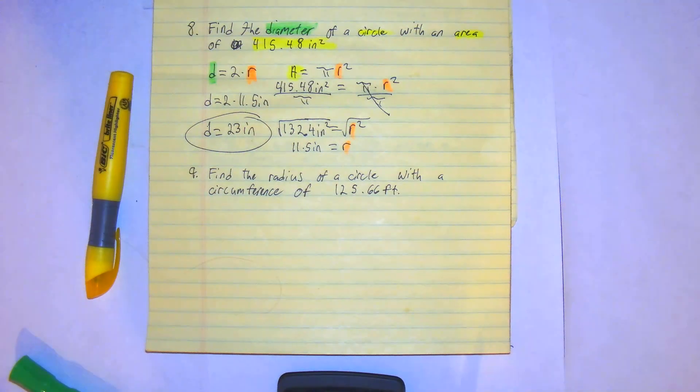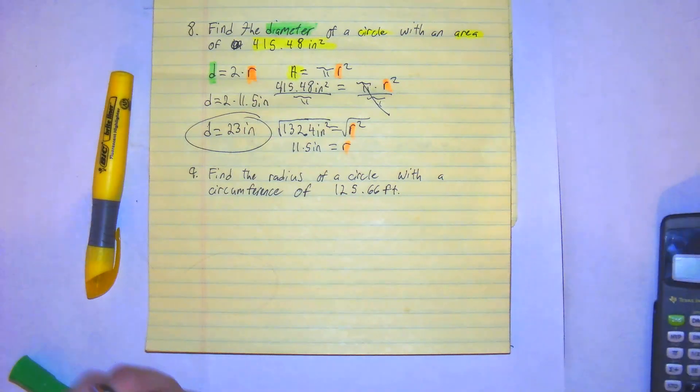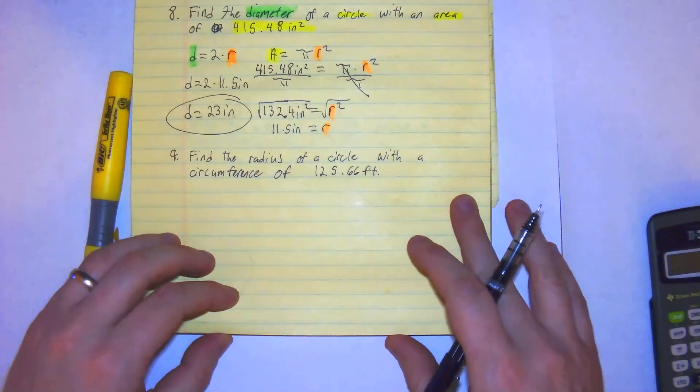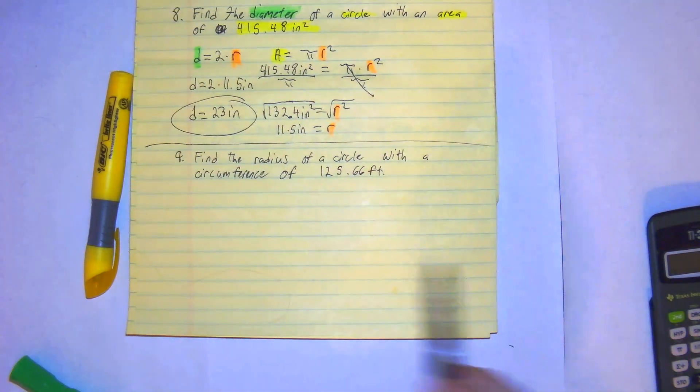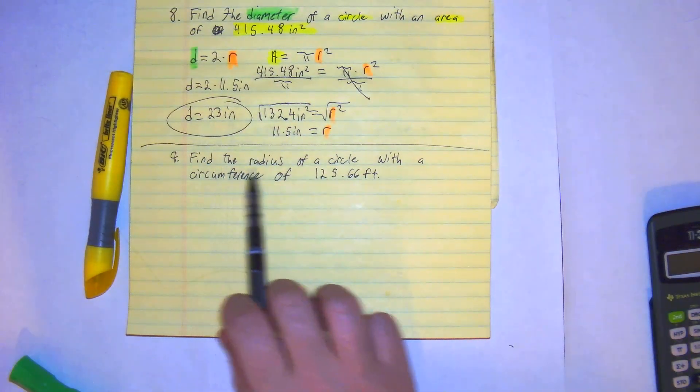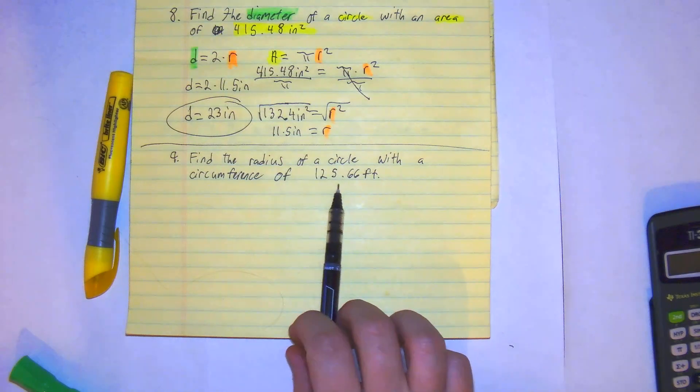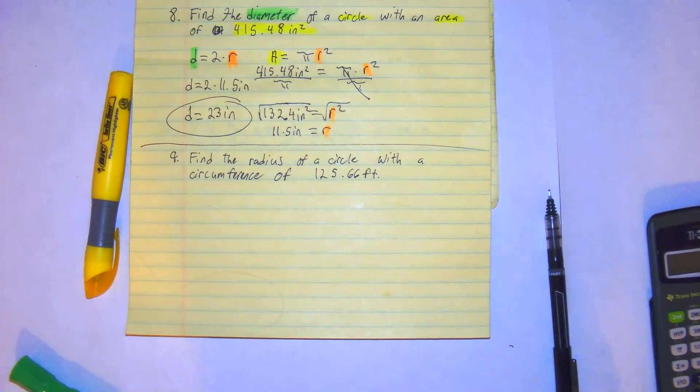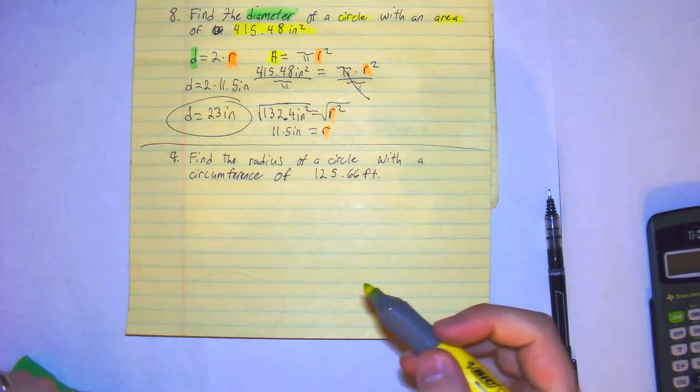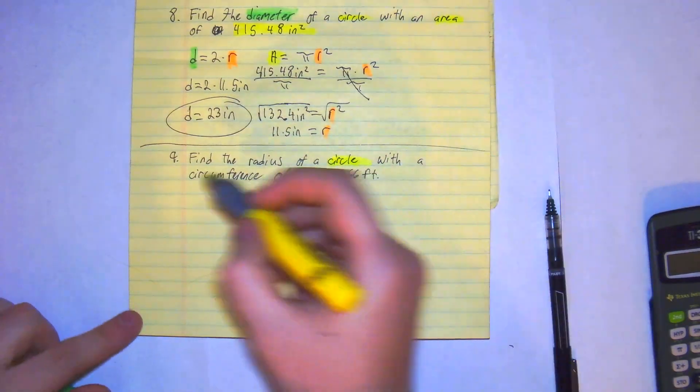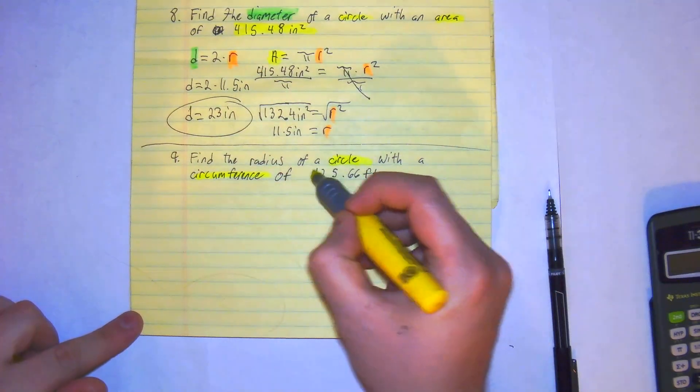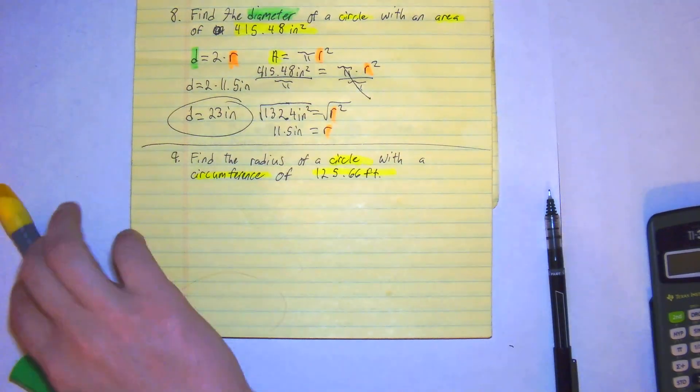That's how you would do number 8. All right. Last one to look at is number 9. So we're going to focus down here. Find the radius of a circle with a circumference of 125.66 feet. First, we're given a circle with a circumference of 125.66 feet.